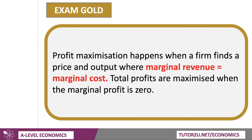Profit maximisation happens when a business finds a price and an output where the marginal revenue equals the marginal cost. In other words, the next unit produced and sold adds as much to revenue as it does to cost. Total profit — the difference between total revenue and total cost — is maximised when the marginal profit is zero.